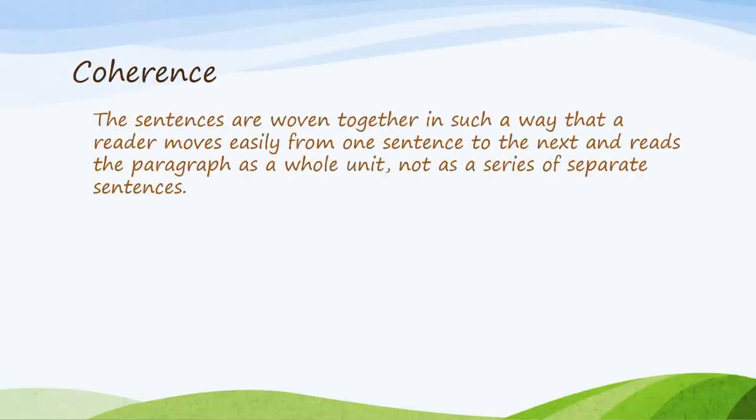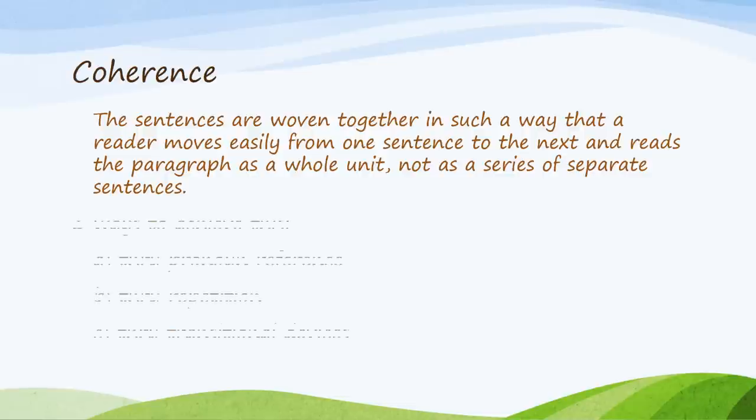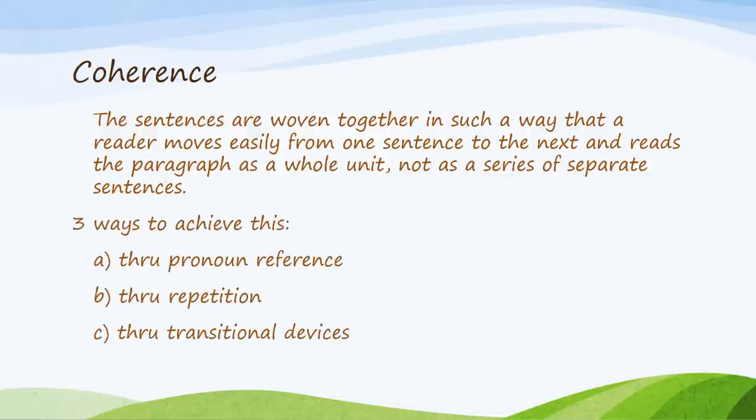The second characteristic of a paragraph is coherence. While unity is about keeping a single central idea, coherence is the act of weaving — the reader moves easily from one sentence to the next with smooth transitions. The paragraph reads as a whole unit and doesn't appear as if it were written by different authors or as separate sentences. You can achieve coherence in three ways: pronoun reference, repetition, and transitional devices.